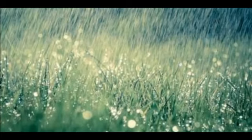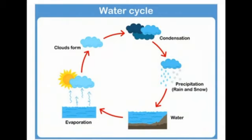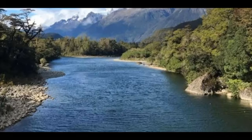First one, rainwater. Rain is the major source of water and major component of the water cycle. It deposits most of the fresh water on the earth.